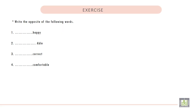Exercise: Write the opposite of the following words. 1. Happy — the opposite meaning of happy is unhappy. 2. Able — unable. 3. Correct — incorrect. And the last one: comfortable — the opposite meaning of comfortable is uncomfortable.